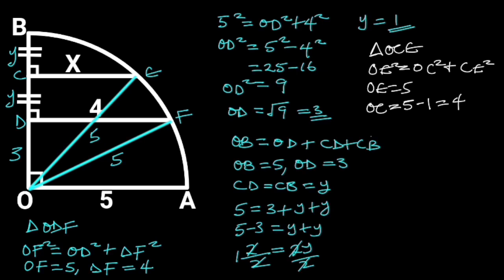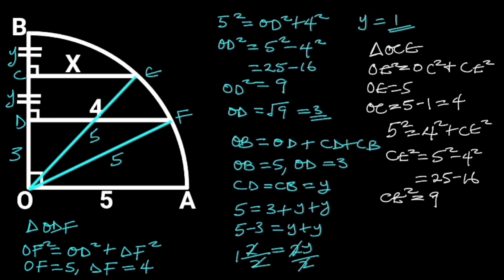Substituting these values in the formula will give us 5 squared is equal to 4 squared plus CE squared. If we make CE squared the subject formula, we will have CE squared is equal to 5 squared minus 4 squared. 5 squared is equal to 25, and 4 squared is equal to 16. 25 minus 16 is equal to 9. So CE squared is equal to 9. Taking the square root of both sides will give us CE is equal to 3. Hence, X is equal to 3 units.